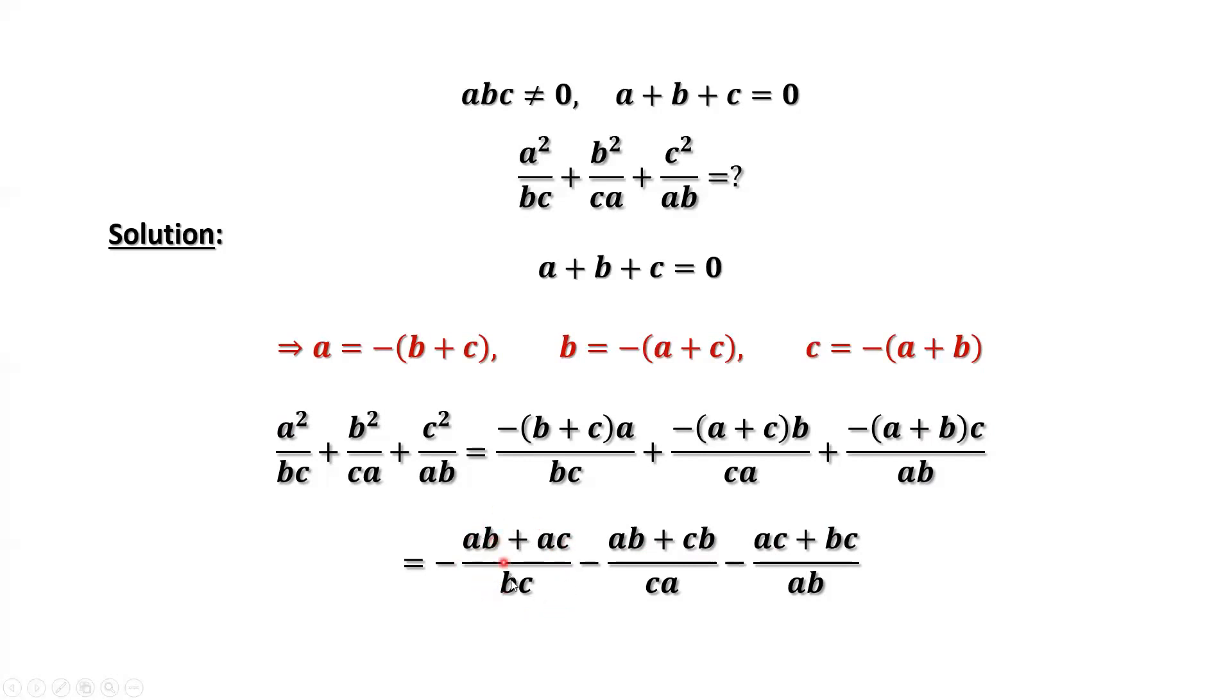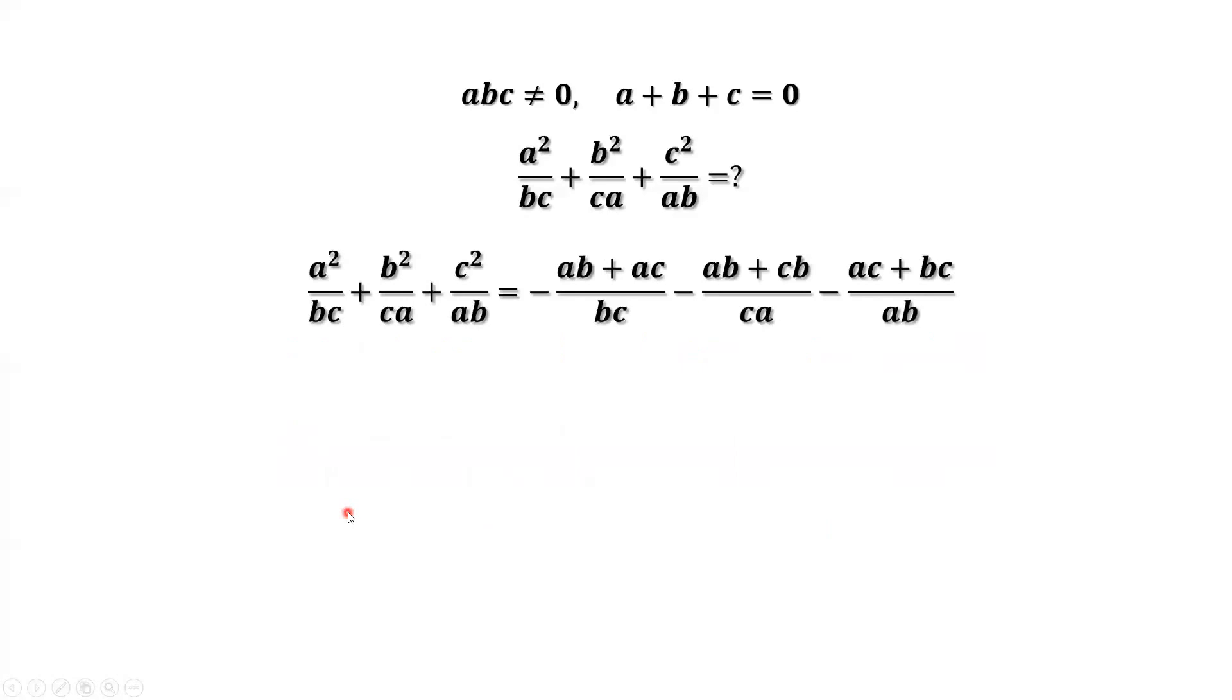AB over BC. Move to the next page. AB over BC. We have B in common. Cancel B. Then you have A over C. Negative sign is outside. Look at here, AC and BC. We can cancel C. Then we have A over B.